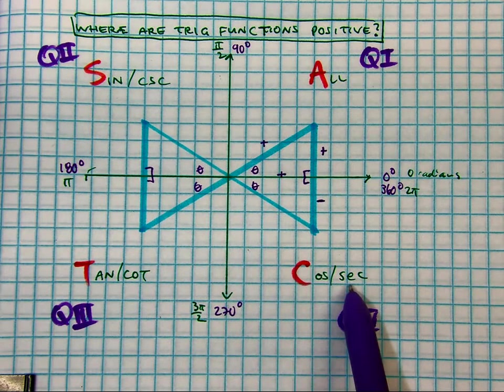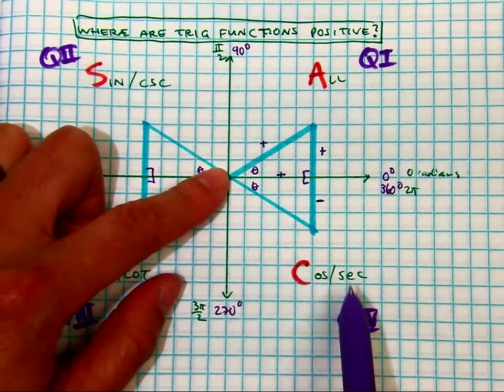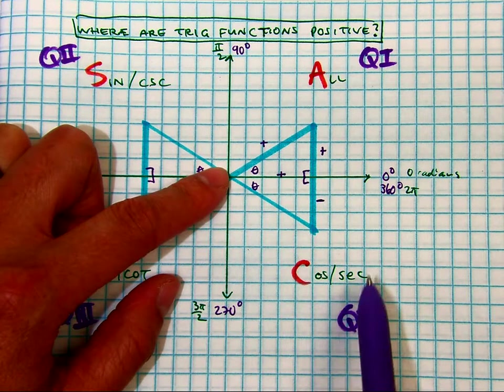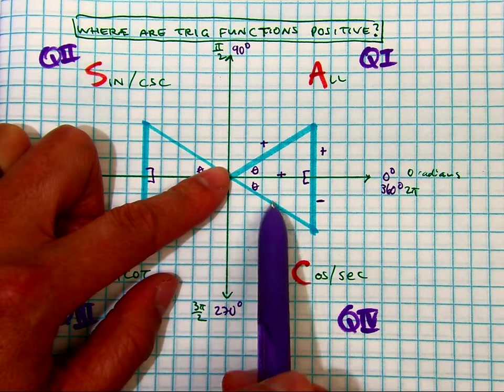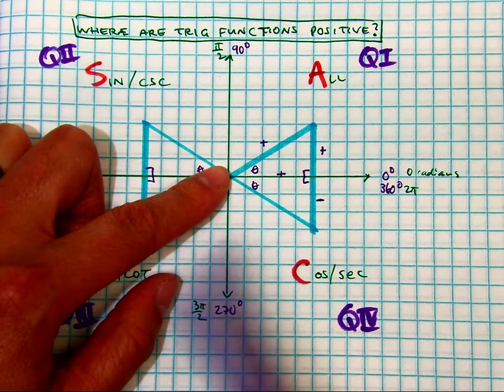Let me show you how secant is positive. Secant is the reciprocal of cosine. Cosine is x over r, so secant is going to be r over x. So you have the r, which is always positive, and then over the x, so positive divided by positive is a positive.